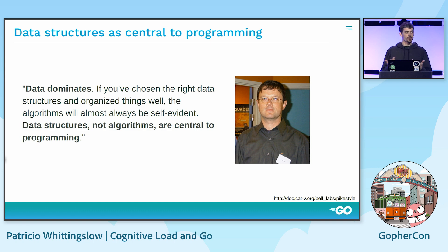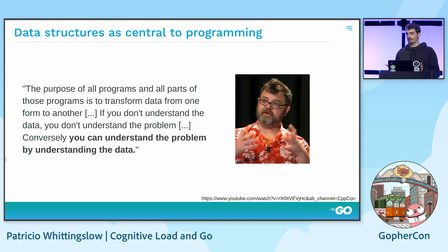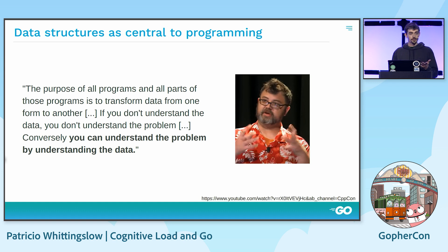There is no hierarchical difference like in C-like languages. Mike Acton, a notable figure in the C++ world, says: "The purpose of all programs and all parts of those programs is to transform data from one form to the other. If you don't understand the data, then you don't understand the problem. Conversely, you can understand the problem by understanding the data." So others also assert that the data structure precedes the code, and Go coincidentally forces us to find the data structures beforehand.